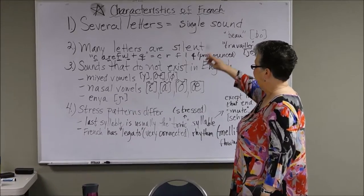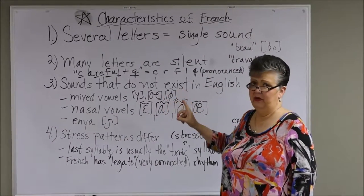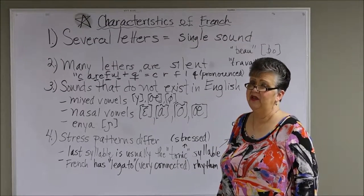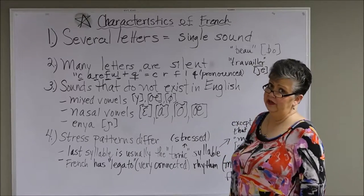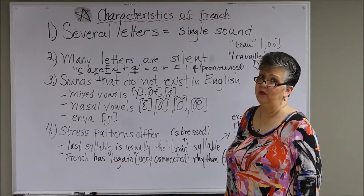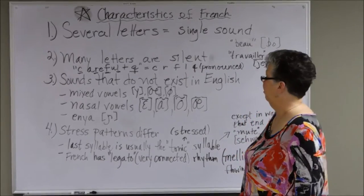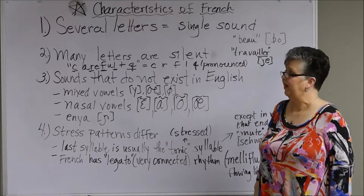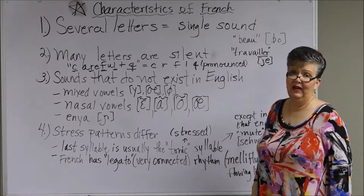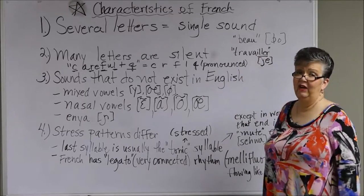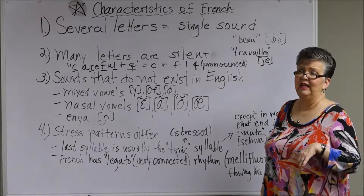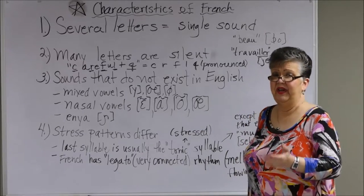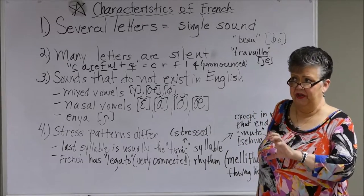First of all, the number one thing, if you haven't already studied this, is that several letters in French are going to equal one sound. That's the key to learning this language — to learn what letter groups equal what sounds. For example, B-E-A-U has four letters that equal one sound: 'bo.' In T-R-A-V-A-I-L-L-E-R, the I-L-L-E-R equals one sound: 'y.' So you get 'travailler.'